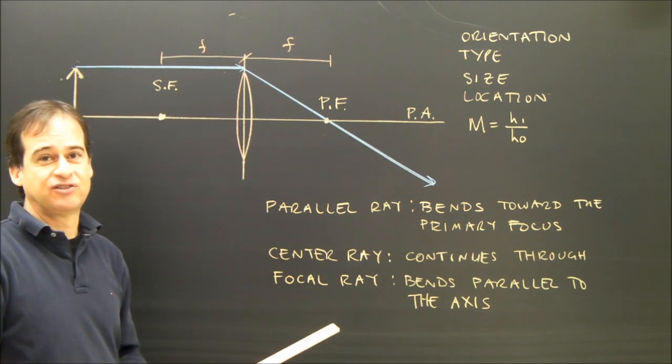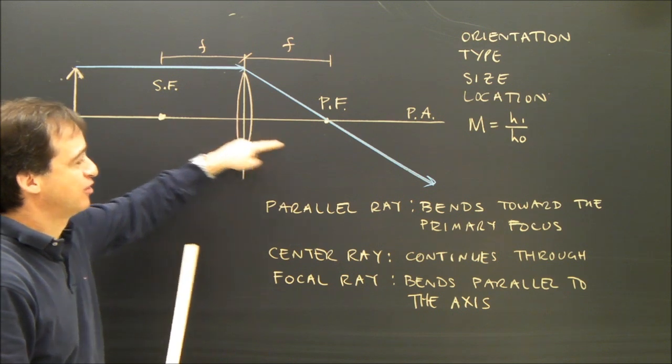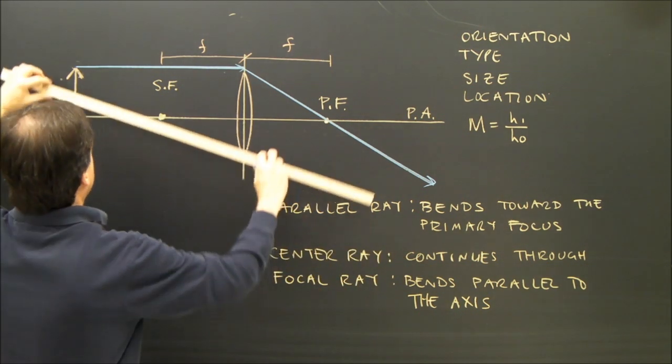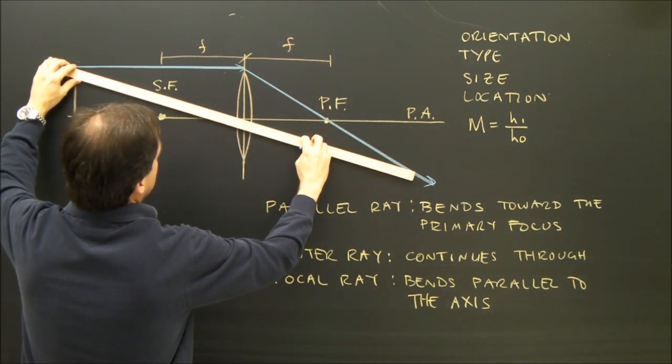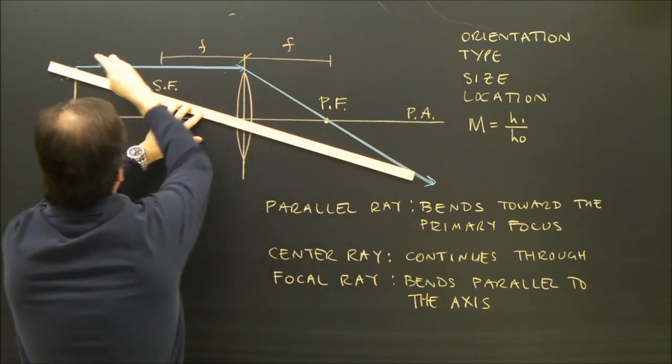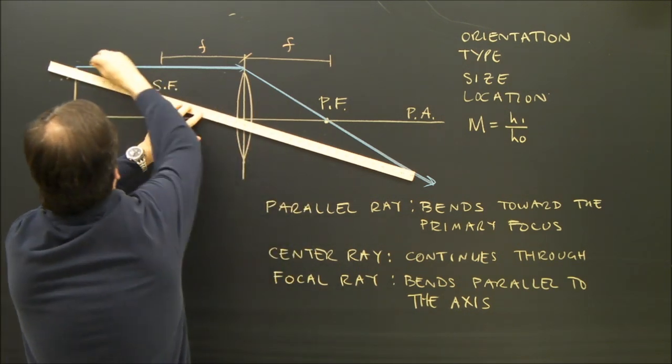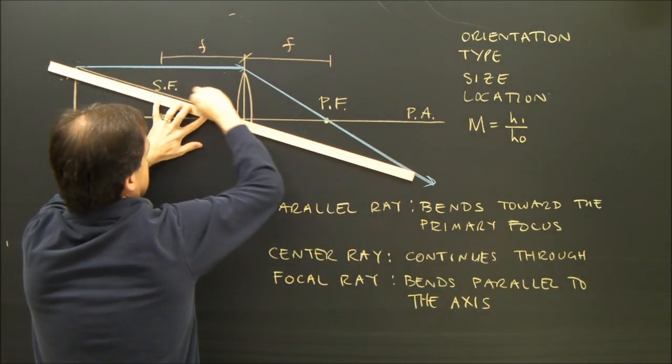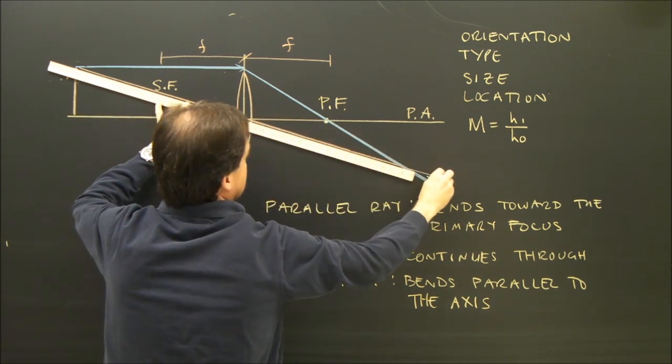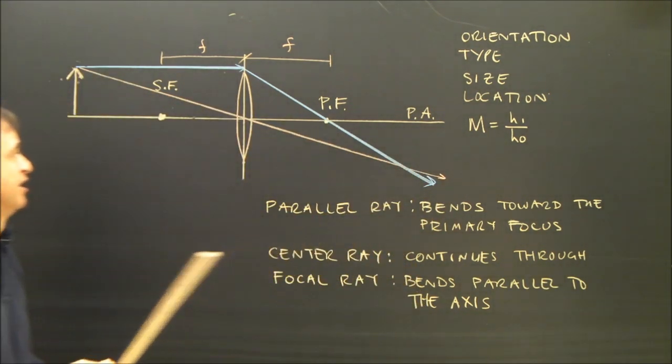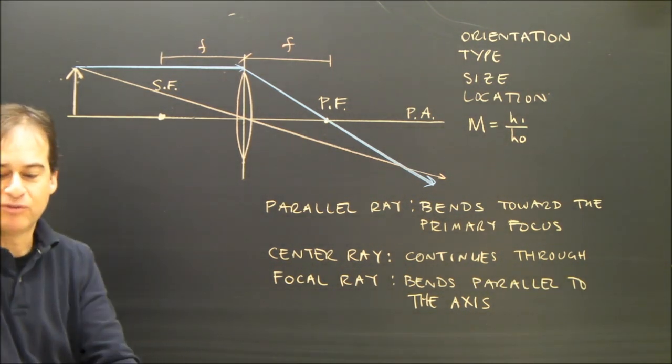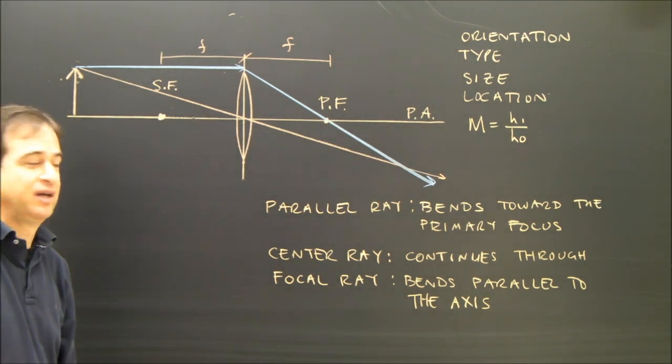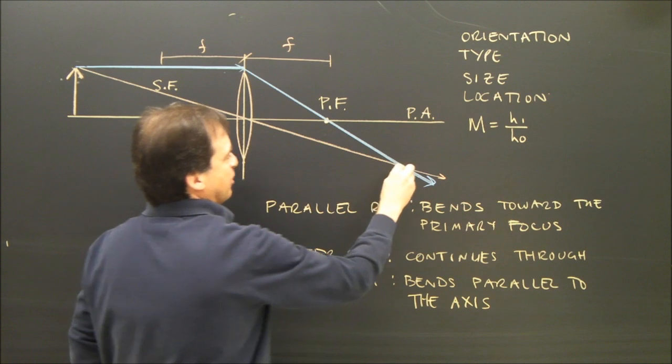The second ray is called a center ray. It goes through the center and just continues in a straight line, so that's very easy. From the top of my arrow, through the center of the lens, I'm going to do this in another color. There is my center ray. So I've got two of them there. That means I've located my image. My image is going to be right here.